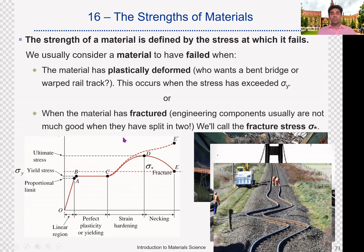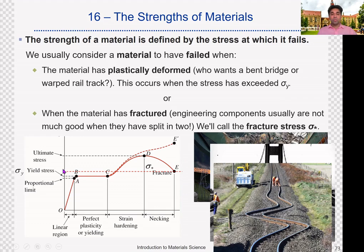There is another criteria we can consider: fracture stress. We can assume that a material has failed when it is fractured. The reason we discuss fracture stress is that some materials just do not deform before fracture, like ceramics and glasses — they just shatter without showing any permanent deformation. For some materials the fracture stress is less than the yield stress. When considering failure, yield stress and fracture stress are two important parameters, and depending on the material or application type, we must consider which is the relevant one.